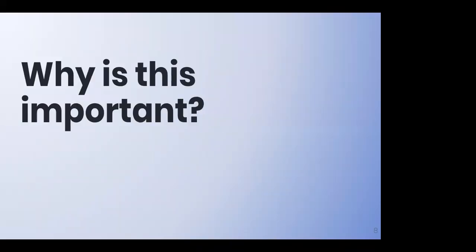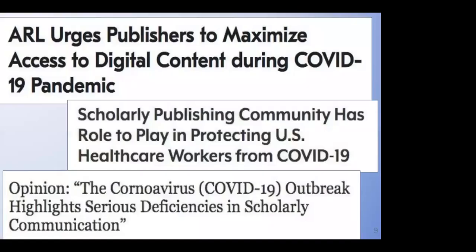So why is this important? Any thoughts on why this is important right now and in general? From Megan: because research can happen faster if everybody shares their data, like with COVID. Yes, exactly — that is a great example, and that is the same example that I have. These are some very recent headlines when I searched for scholarly communication and COVID-19: publishers getting information out to people, the scholarly community's role in protecting healthcare workers through sharing information, and scholarly communication supporting the sharing of research and data related to the pandemic.